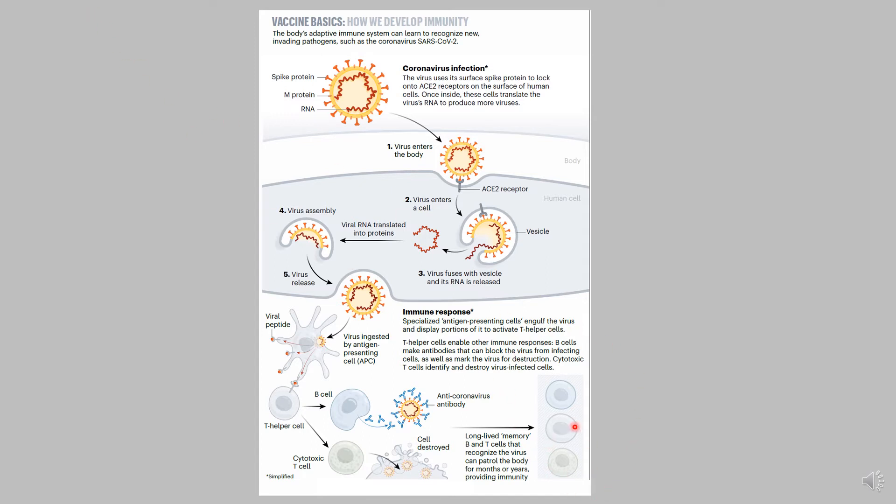So whether it's RNA, DNA, live virus, or subunit vaccine, every vaccine's end goal is to produce long-lived robust adaptive immunity.